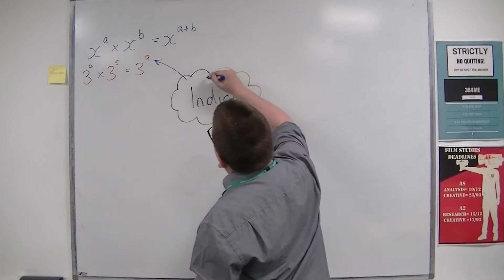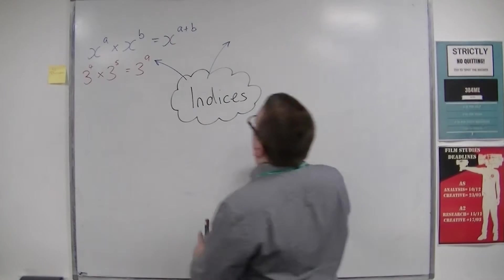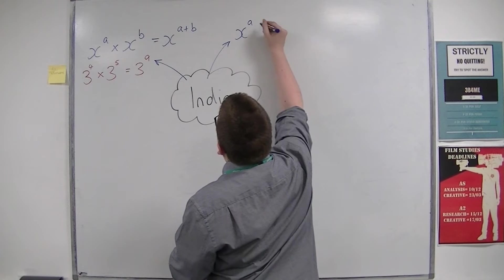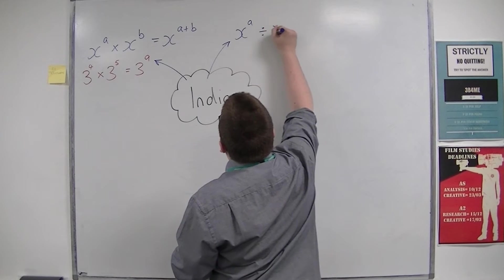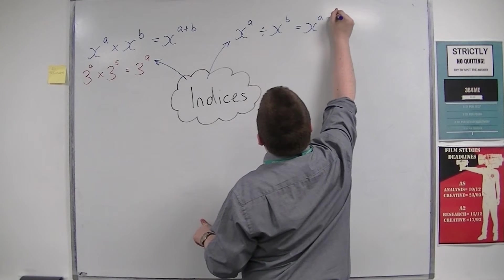Let's look at another. If you instead divide but still have the same base number, so x to the power of a divided by x to the power of b, then this is x to the power of a minus b.